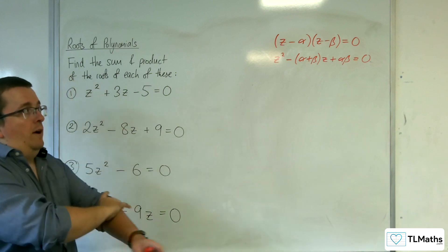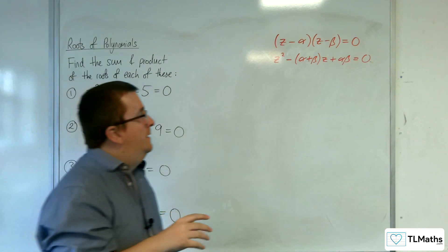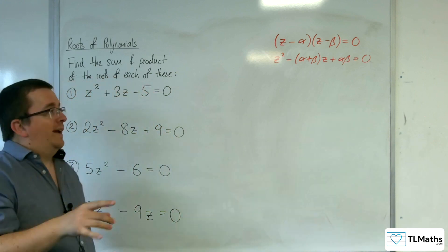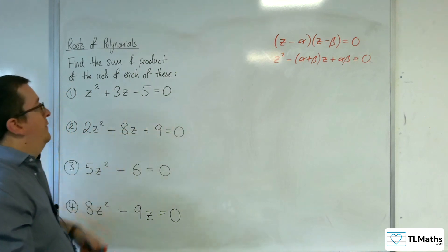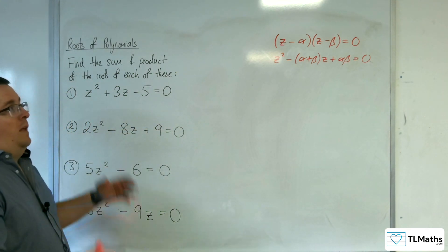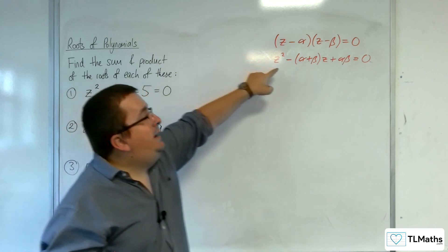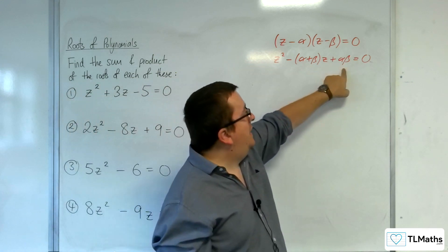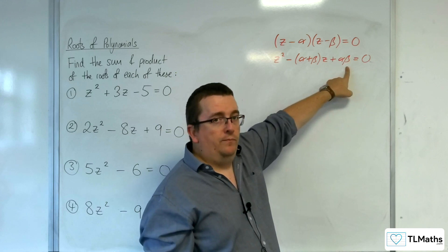But the thing is, this is what makes this process very straightforward and easy, and you can overcomplicate it if you're not careful. If you just divide through by the coefficient of the z squared first and make sure you've got one lot of z squared, then you can read off directly the alpha plus beta and the alpha beta. That's the sum of the roots, that's the product of the roots, and you're done.